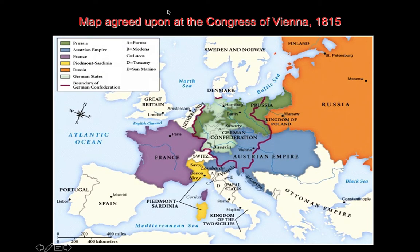When Napoleon's defeated, this is the map that the Europeans come up with — they agree at a diplomatic meeting. The diplomatic meeting was called the Congress of Vienna, held in the city of Vienna in 1815.